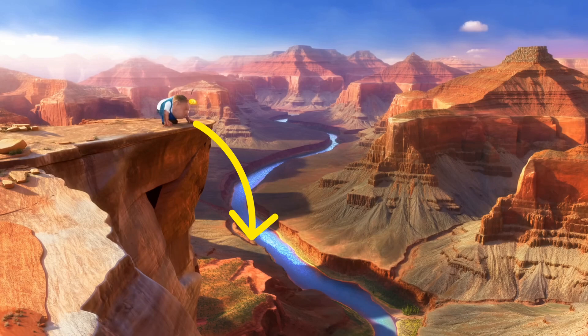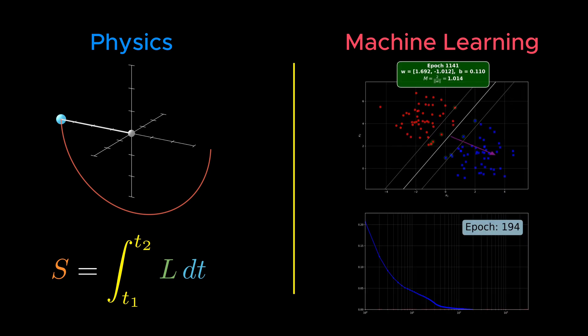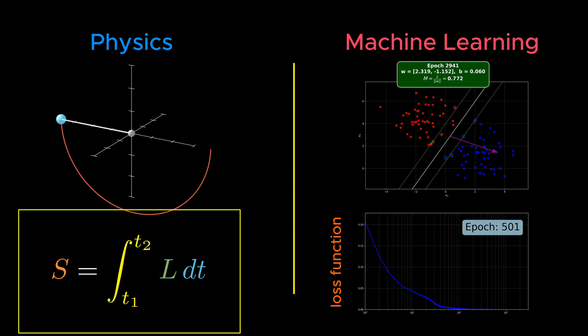In other words, you need to optimize your path to the river to minimize the time it takes to reach it. This is just the same concept that underlies both physics and machine learning. In fundamental physics, the governing equations of motion come from minimizing what physicists call the action. On the other hand, every machine learning model learns by minimizing something we call the loss function.